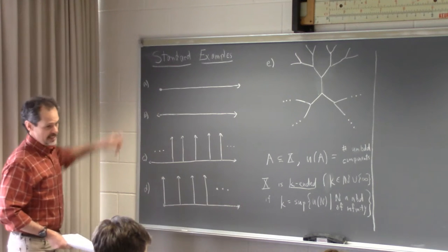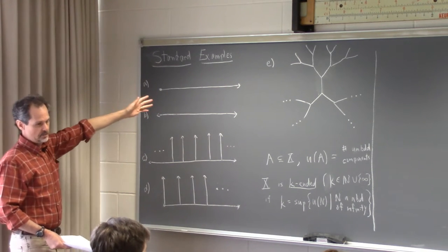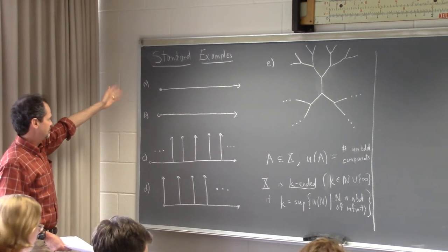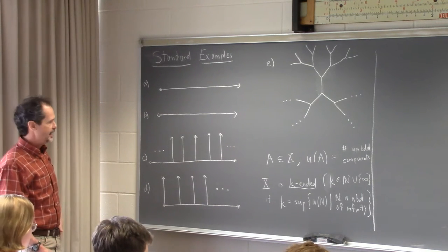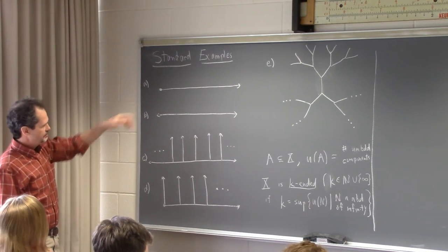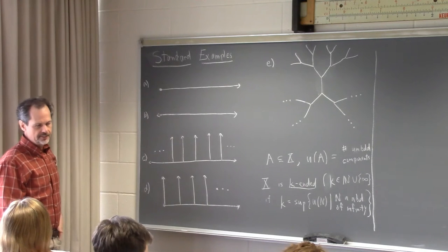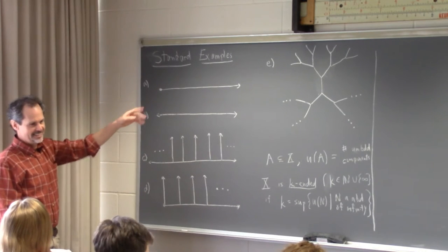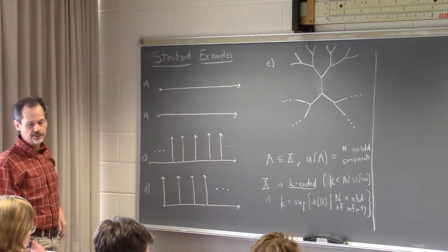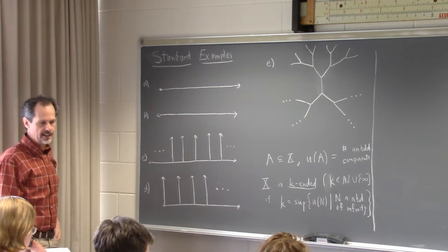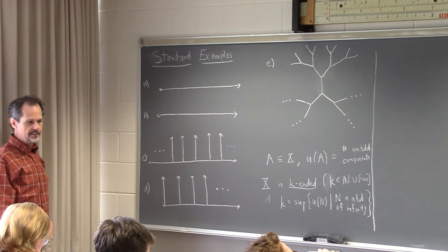The simplest example is if you take a half line — just cut the real line in half and look at the positive half. The idea is fairly clear that it has one end. But if you have the entire line, you've got two different directions you can head off to infinity. That's a two-ended space.